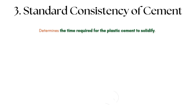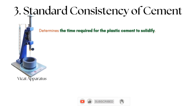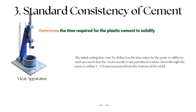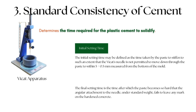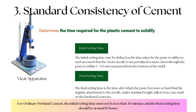Setting Time Test on Cement: The setting time test determines the time required for the plastic cement to solidify, and is conducted using the Vicat apparatus. The initial setting time is the time taken by the paste to stiffen such that the Vicat needle cannot move to within 5 ± 0.5 mm from the bottom of the mold. The final setting time is the time after which the paste becomes so hard that the angular attachment to the needle, under standard weight, fails to leave any mark on the hardened cement. For ordinary Portland cement, the initial setting time must not be less than 30 minutes and the final setting time should be around 10 hours.